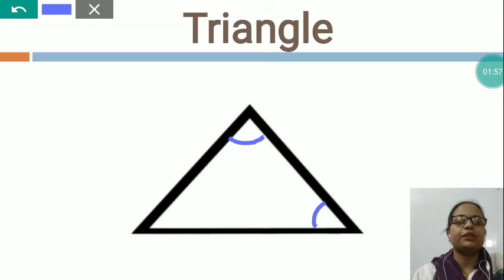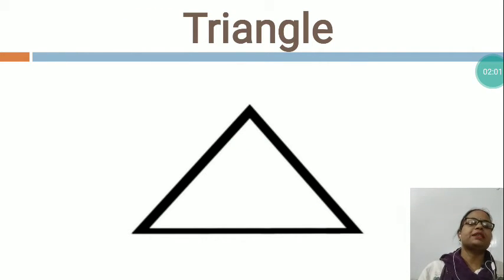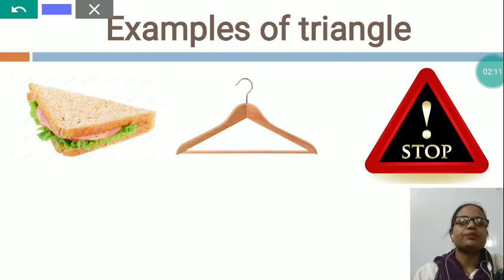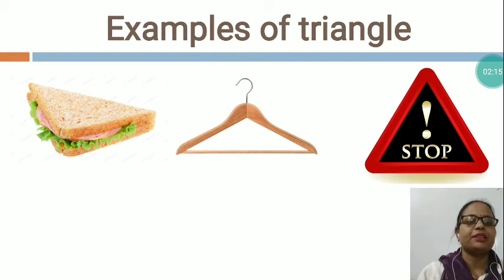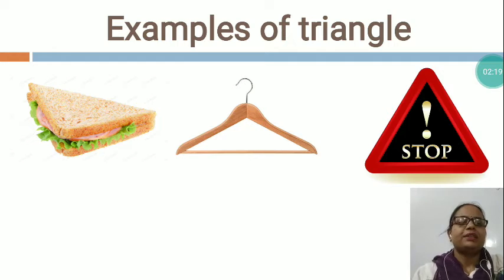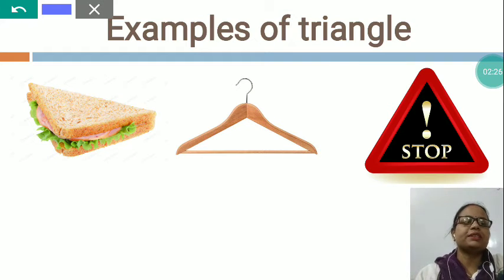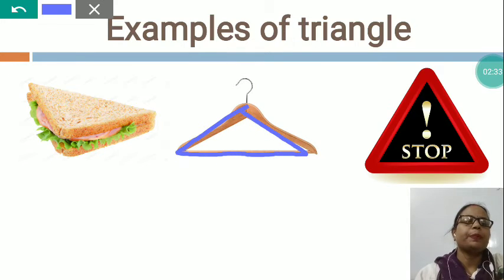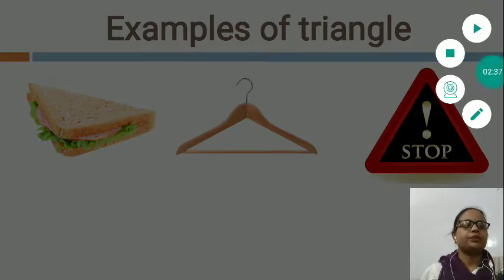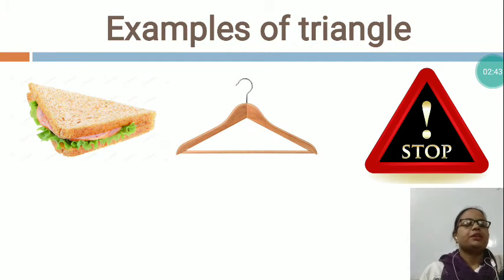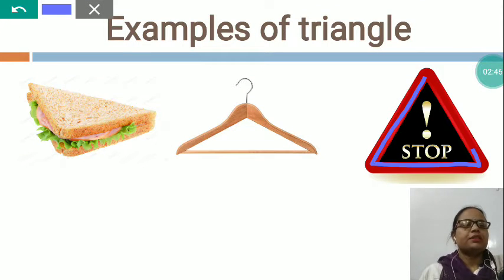You can see these all are corners. Now I would like to show you some examples of triangle. This is sandwich — have you eaten sandwich? Mama cooks sandwich for you. Which shape? This sandwich shape is triangle. Now this is a hanger — we hang the clothes. Which shape? Triangle shape. Now this is a traffic sign — which shape? Triangle shape.